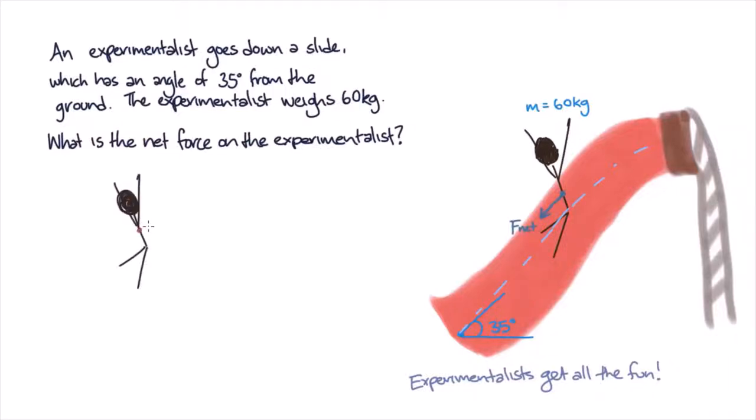On Earth, we have gravity, which as always points directly downwards. But there's also a normal force from the slide pointing perpendicularly to the slide's surface. We know this because the experimentalist is hopefully not breaking the slide. So how can we work out the net force?